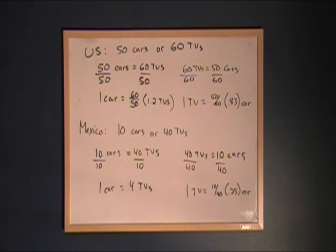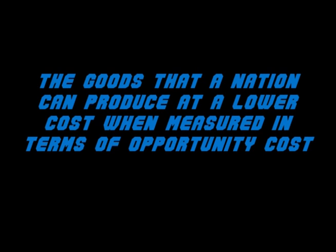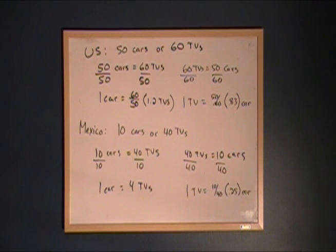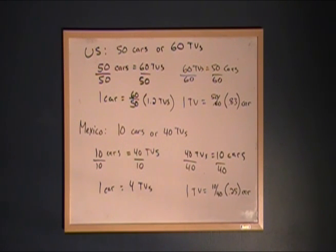Now we have to decide which country holds the comparative advantage in cars and which holds it in TVs. Comparative advantage is found in the goods a nation can produce at a lower opportunity cost. Looking at cars first: in the United States, the opportunity cost of producing one car is giving up 1.2 TVs. In Mexico, the opportunity cost of producing one car is giving up 4 TVs.